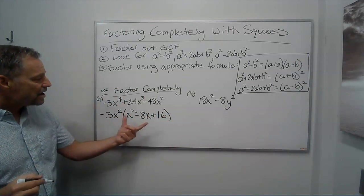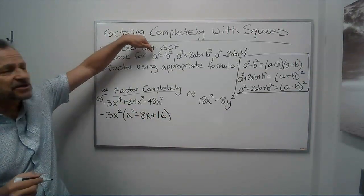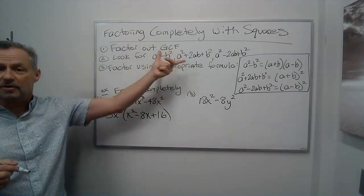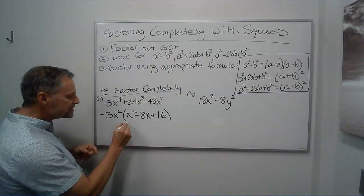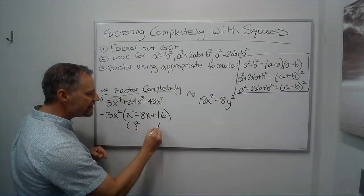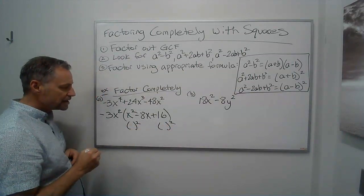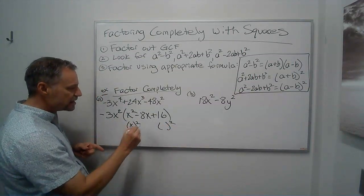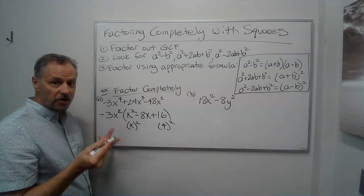Okay. Now, I don't just have two terms, so it can't be a squared minus b squared. So let's look for one of the perfect square trinomials. So I look to see if this is a perfect square and this is a perfect square. And they are. This is x squared. This is 4 squared. So, so far, it looks good.